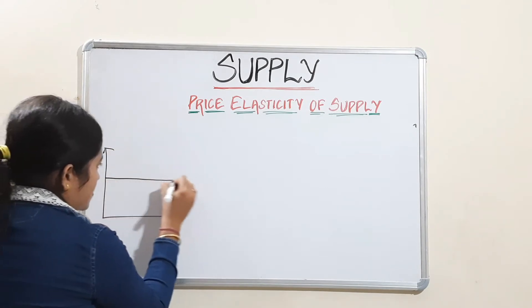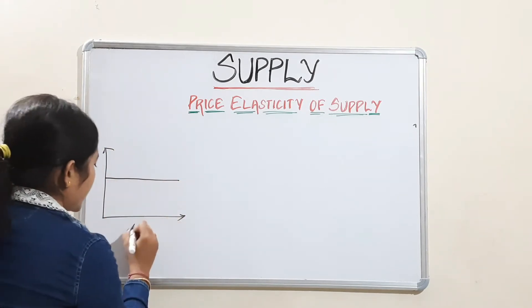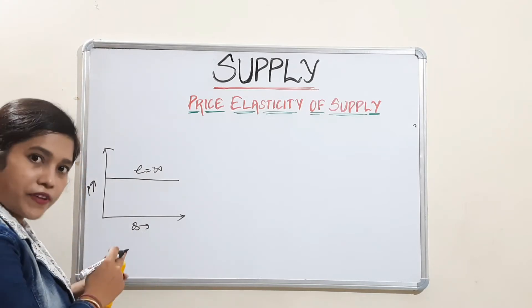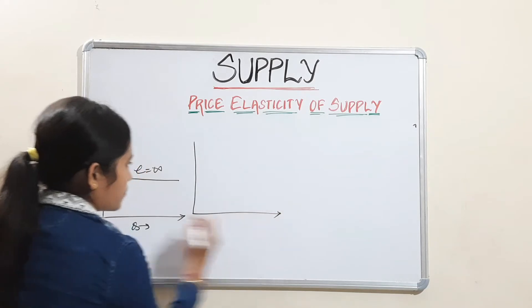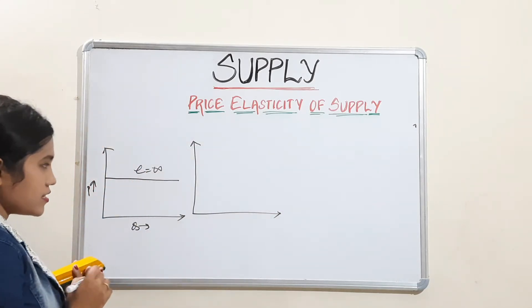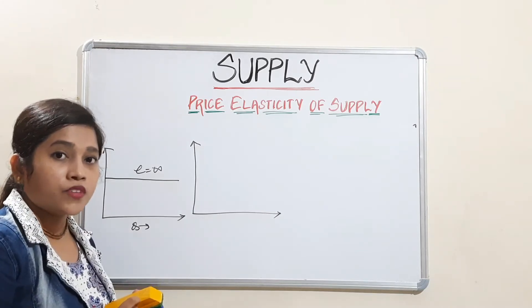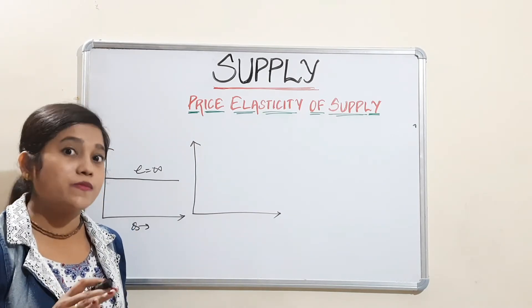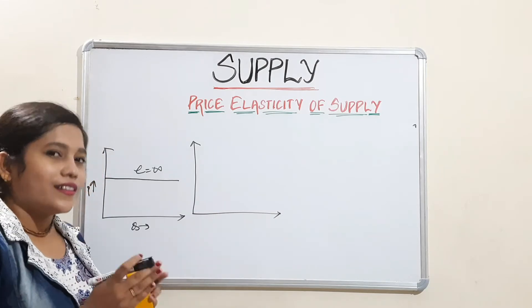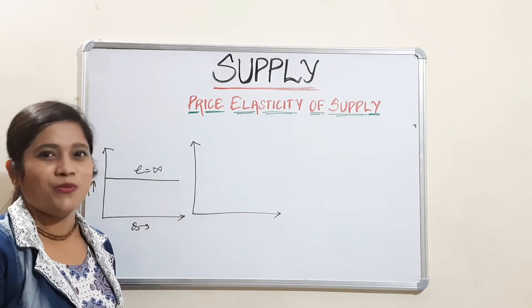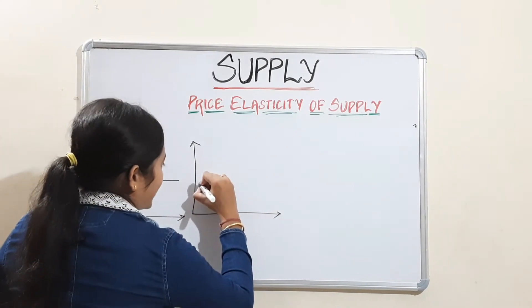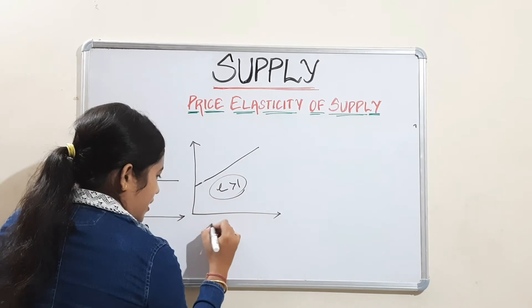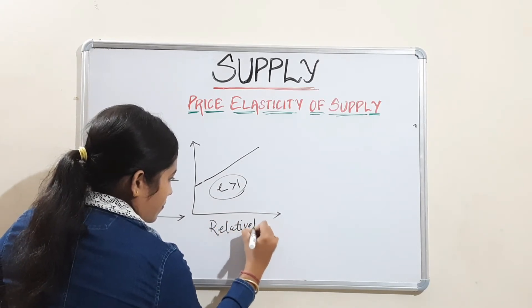The perfectly elastic curve will be horizontal, with quantity on the x-axis and price on the y-axis. The value of elasticity in the perfectly elastic case will be infinity. Next is relatively elastic — in the demand chapter the curve was flatter, and here also the curve will be flatter, but slightly different because supply is upward sloping. So it will be relatively flatter like this, and elasticity is greater than 1.